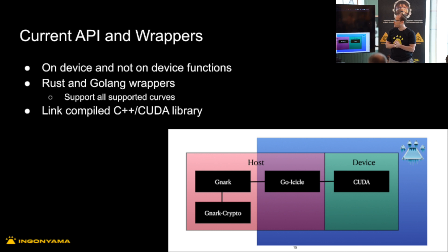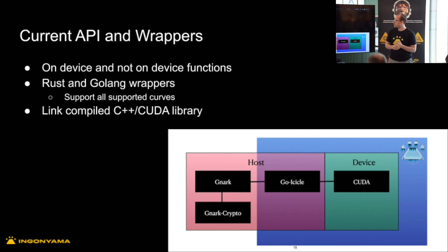We also have three curves currently supported: BLS12377, BLS12381, and BN254. For BLS12381, we also support Poseidon hash. That is also currently being expanded.